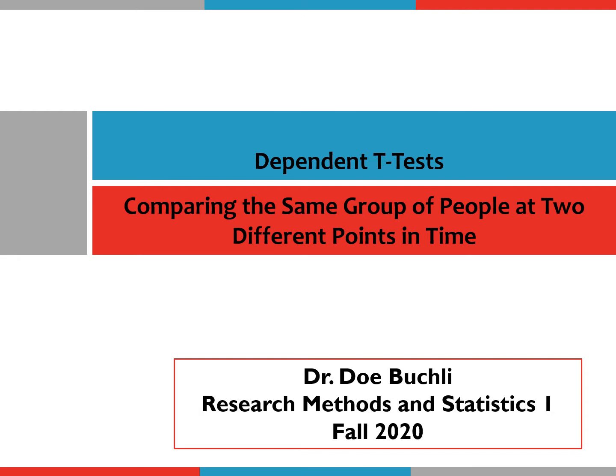If you're familiar with longitudinal studies, those might follow a group of kids from the time they are infants. They might administer some kind of test when they're infants and then administer the same kind of test when they're six months old. So essentially what they're looking for is change between time one and time two in the same person — comparing scores when the child was an infant to scores when they're six years old. That's essentially what we're doing with the dependent t-test.